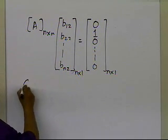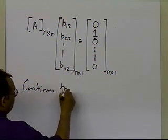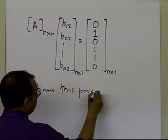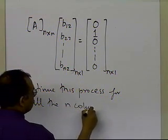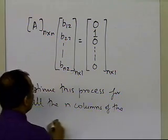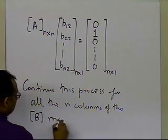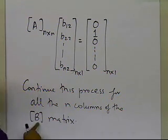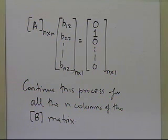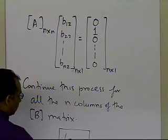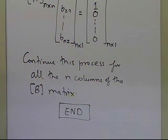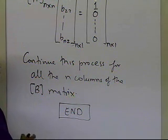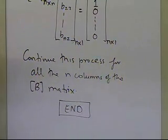I continue this process for all n columns of the B matrix, and we know that the B matrix is nothing but the inverse of A. That's how we use the LU decomposition method to find the inverse of a matrix. In a separate segment, we will take an example to show how to find the inverse of a matrix using LU decomposition. And that's the end of this segment.